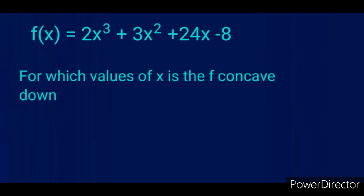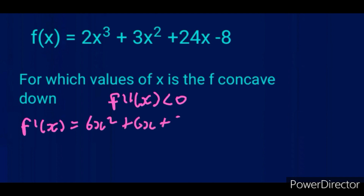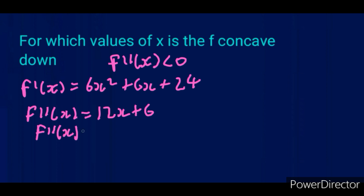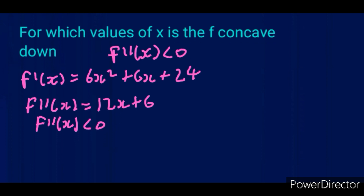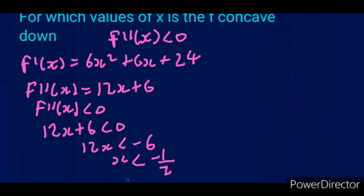Here is another question: for which values of x is f concave down? We know the second derivative is negative when the graph is concave down. First derivative: f'(x) = 6x² + 6x + 24. Second derivative: f''(x) = 12x + 6. We tell them the second derivative is less than zero: 12x + 6 < 0, so 12x < −6, giving x < −½. This means whenever x < −½, the graph will be concave down.